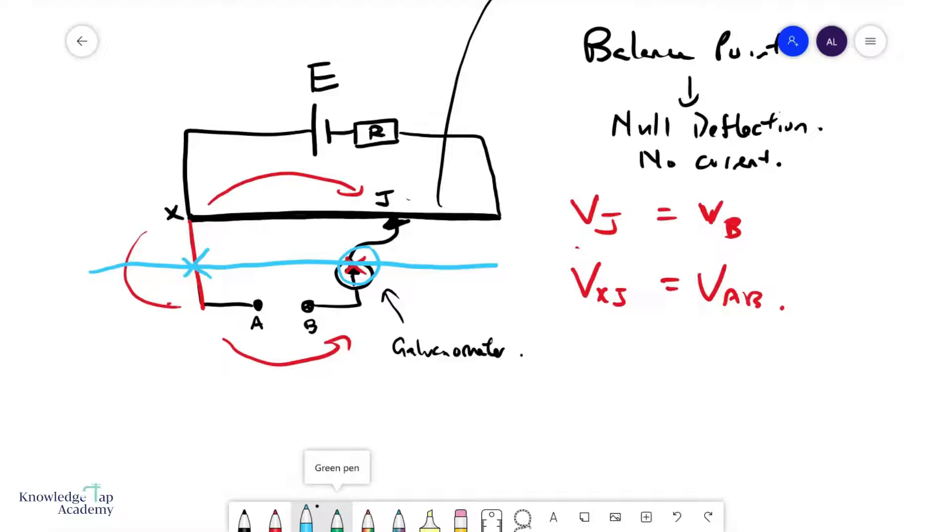Because now that I have the balance point and I know that Vxj equals Vab, I can simply study the top circuit to figure out what Vab will be. We can do that using the potential divider principle.